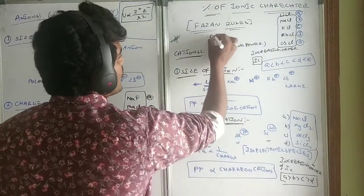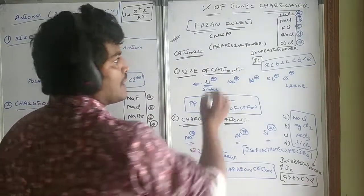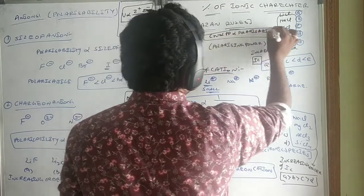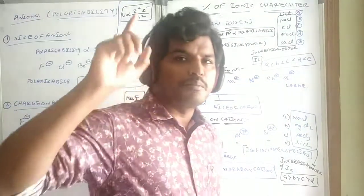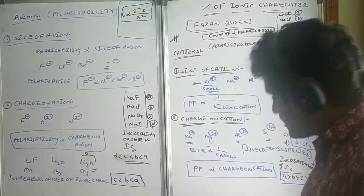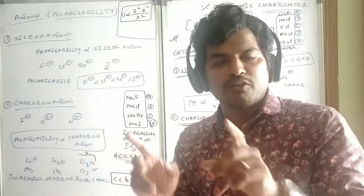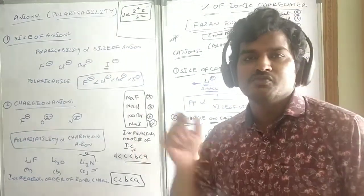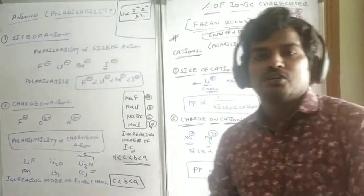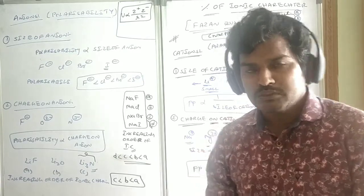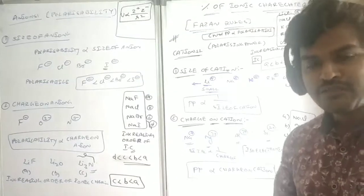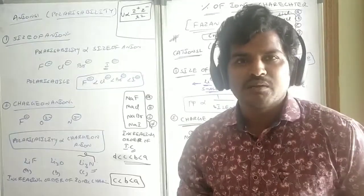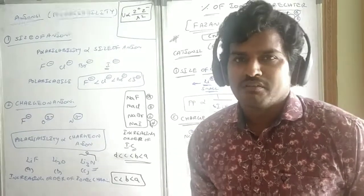The basic rule is: covalent nature is directly proportional to polarizing power and polarizability. No ionic compound is 100% ionic in nature. This property belongs to ionic compounds only — questions will be asked only in the context of ionic compounds. So we can understand what is ionic character, what are Fajans rules, and how to solve problems based on them. If you like this video, please like and share it, subscribe to the channel, and click the bell icon. Thank you.